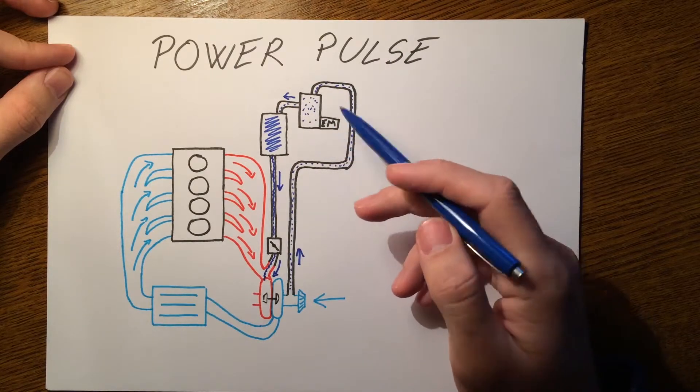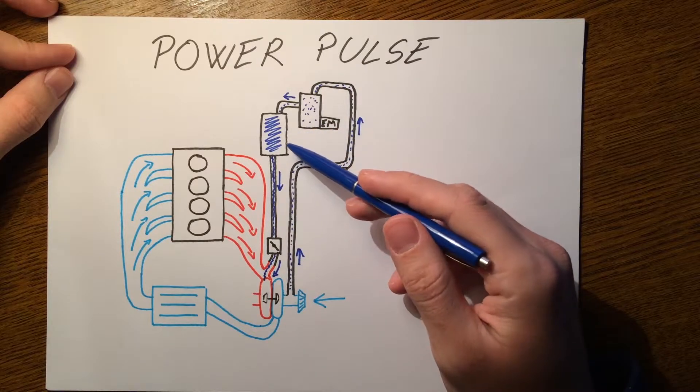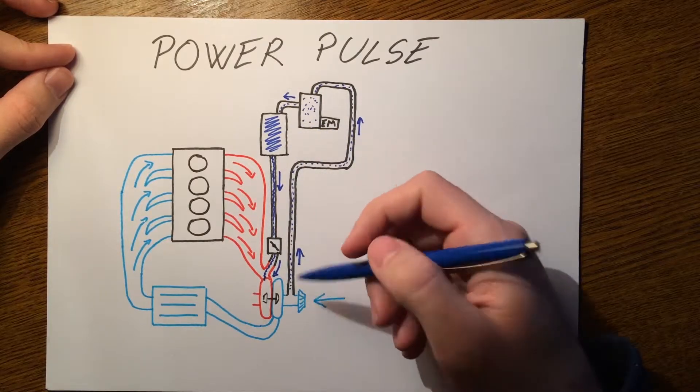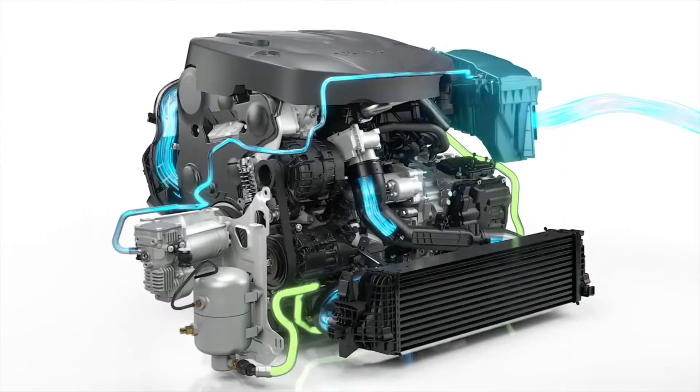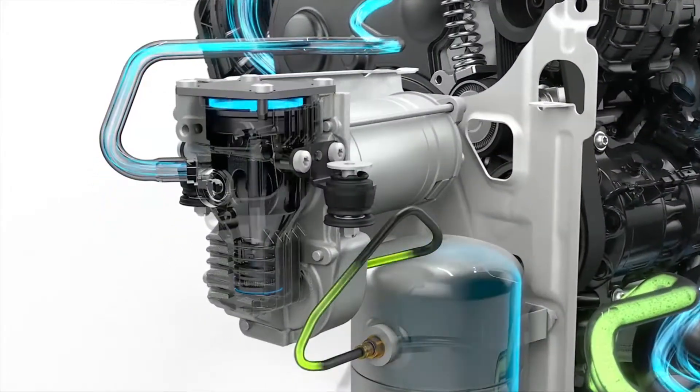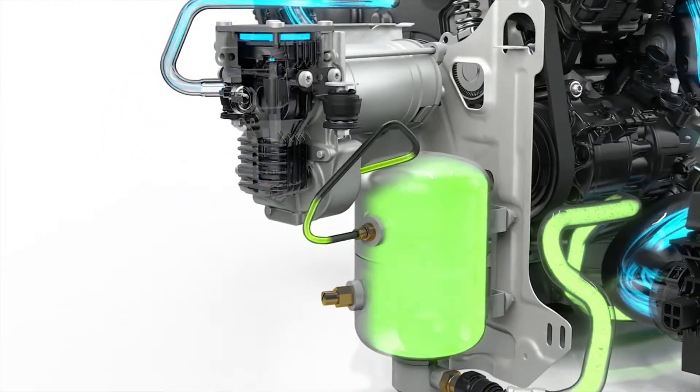An electrically driven compressor and pressurized air tank are added to the powertrain. Power Pulse takes fresh air from the air filter, compresses it, and stores it in a pressurized air tank.